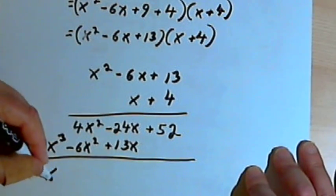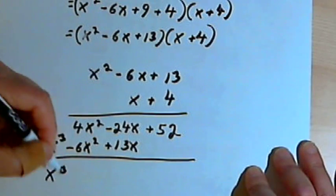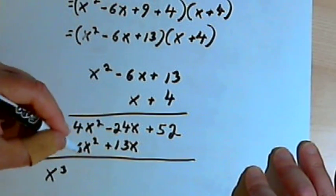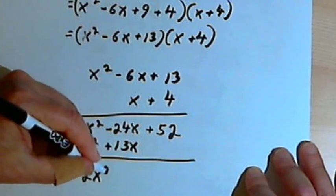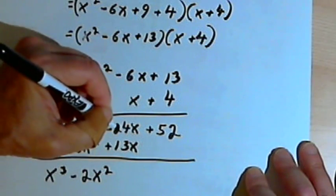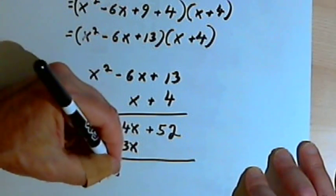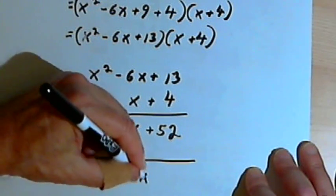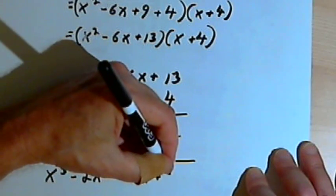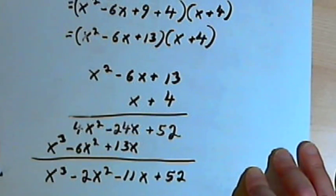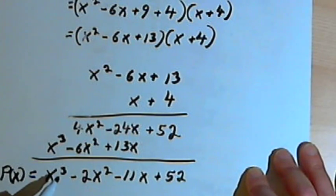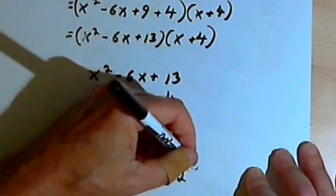And now I'll just add this up. So I'm going to have x to the third. 4x squared minus 6x squared is negative 2x squared. Negative 24x plus 13x is negative 11x. And then that's plus 52.